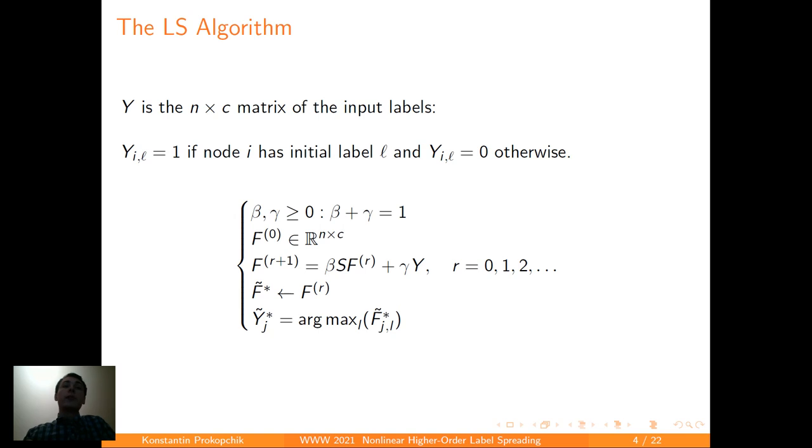First we revise the standard label spreading algorithm because our algorithm will be quite similar to this one. We denote Y as an n by C matrix of the input labels in which n is the number of nodes in a graph, and C is the number of classes that we want to predict. First we fix beta and gamma as parameters, and they should be non-negative, and the sum of them should be equal to 1. We also fix the initial matrix F0, and we do the iterations as a weighted sum of S, the adjacency matrix applied to the F, and the input labels matrix. Once the iterations converge, we look at each row of the obtained matrix, and we take the position of the maximum element of that row, and that will be our label.